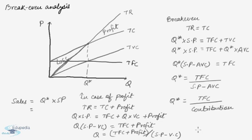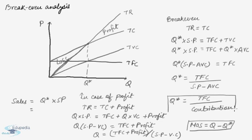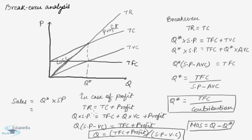Any amount of quantity which is over the break-even quantity is called the margin of safety. So there are three formulas that you can utilize while calculating break-even. The basis of all these formulas is the simple concept: total revenue equals total cost in case of break-even, and total revenue equals total cost plus profit in case of profit.